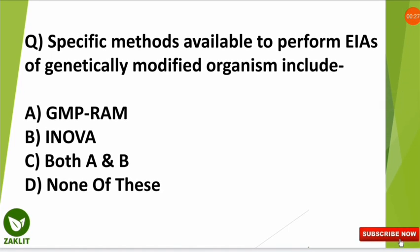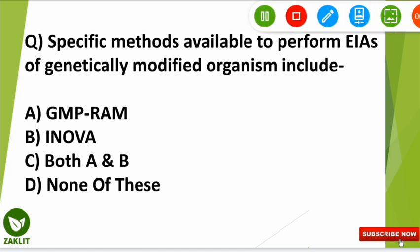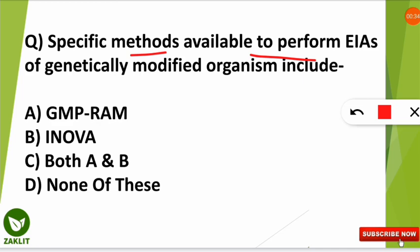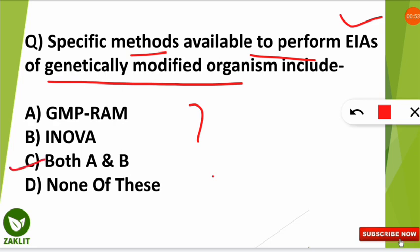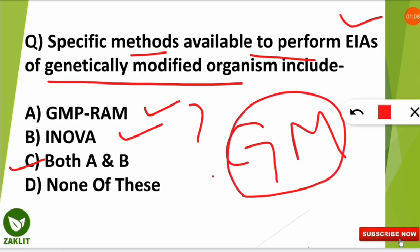This unit deals with environmental assessment, management and legislation. The first question is: what are the specific methods available to perform EIA (Environmental Impact Assessment) of genetically modified organisms? The correct option is C. The two methods are GMP RAM and the Innova technique, which are software tools used for risk assessment of GM plants — to determine whether planting them will affect local varieties or cause other adverse effects. These two specialized EIA software tools should be noted down.